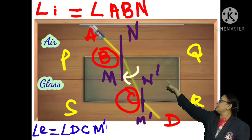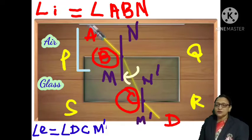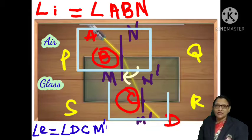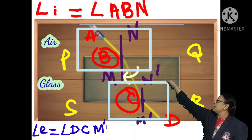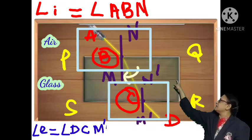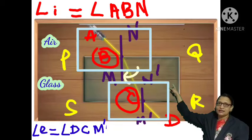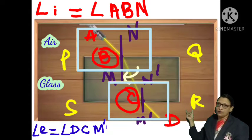Overall, you can observe that the light ray gets refracted twice in the glass slab: first when it enters the glass slab, and second when it emerges out from the glass slab.